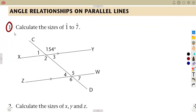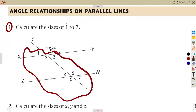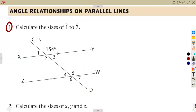On question number one, we need to calculate the sizes of angles 1 to 7. We are given only one angle of 154 degrees — similar to our introduction question where you're given just one angle and need to fill in all the others. Let's consider angle 1 relative to the 154-degree angle.